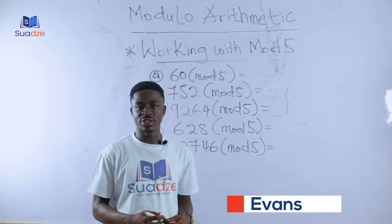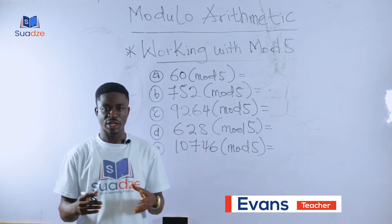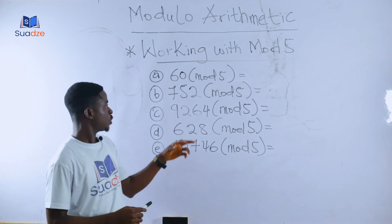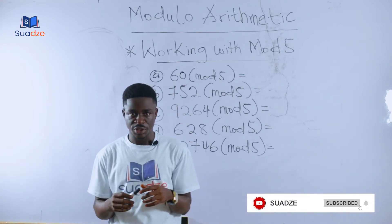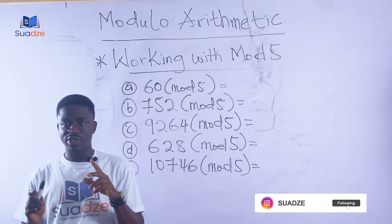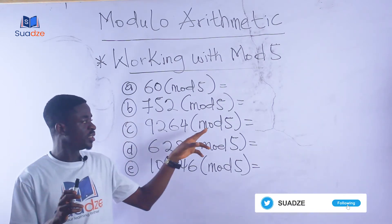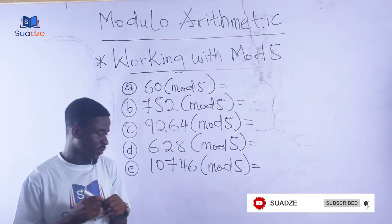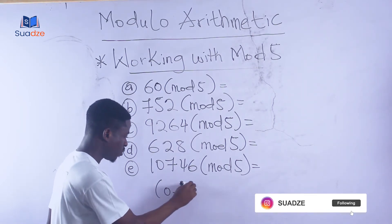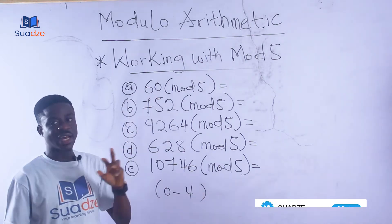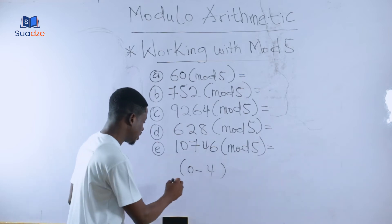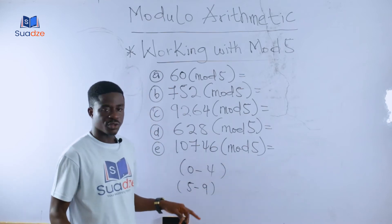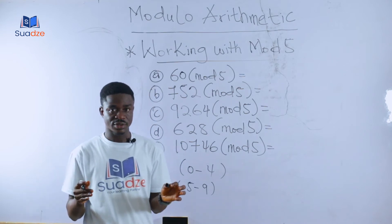In this section we are going to look at how to work with modulo 5. Working with modulo 5 is quite easy. The trick is that when you are given a question relating to modulo 5, we pay attention to the last digits in the integer. If the last digit is from zero to four, then our answer is the last digit. But if the last digit is from five to nine, we subtract five from that last digit.